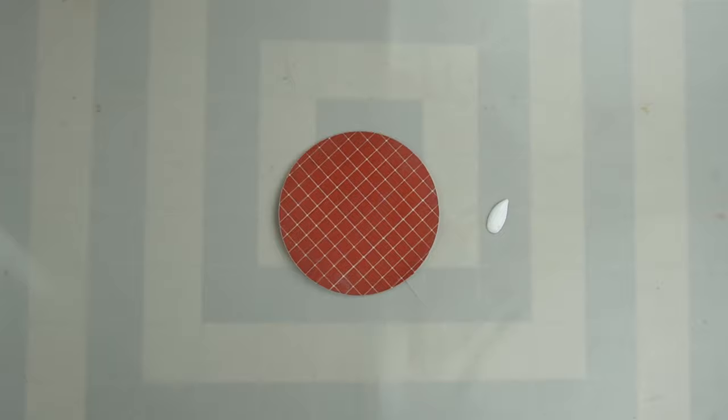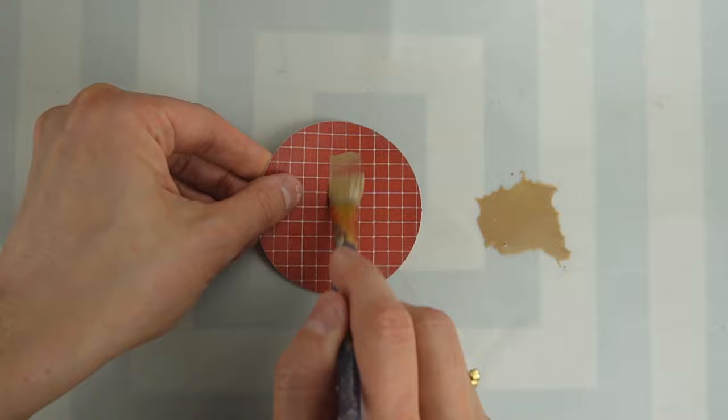To make the tiles look a little older and protect the paper, I'm mixing a little bit of brown paint into matte Mod Podge.